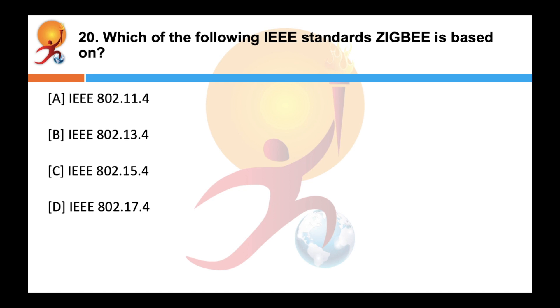Which of the following IEEE standards is ZigBee based on? Correct answer is C. ZigBee is an IEEE 802.15.4 based specification. It is a low power, low data rate and close proximity, i.e. personal area, wireless ad hoc network.